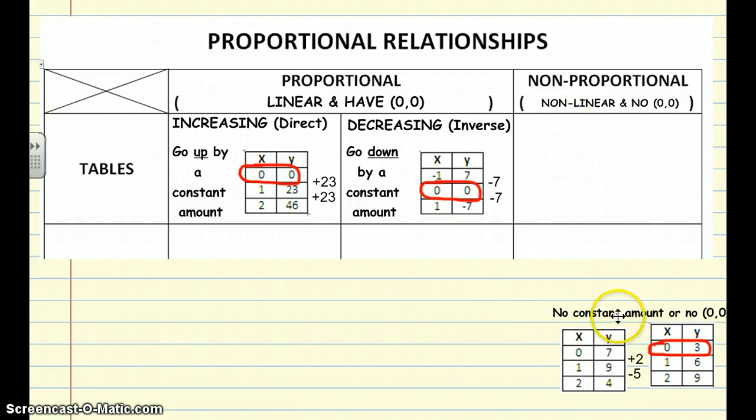Looking at non-proportional relationships, it's the exact opposite of increasing and decreasing. There is no constant amount that it goes up by and it doesn't have (0,0).